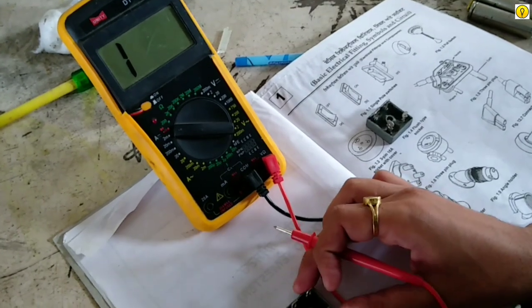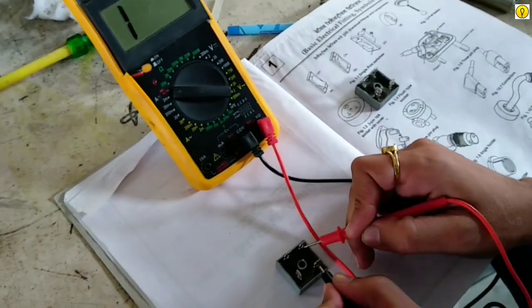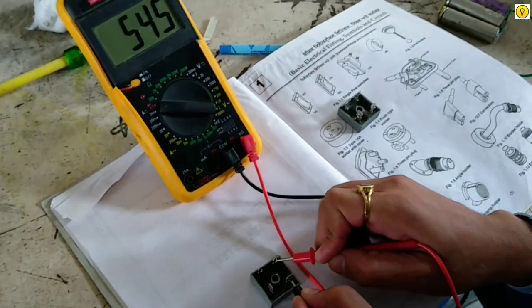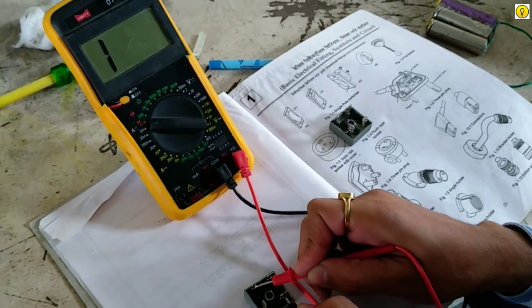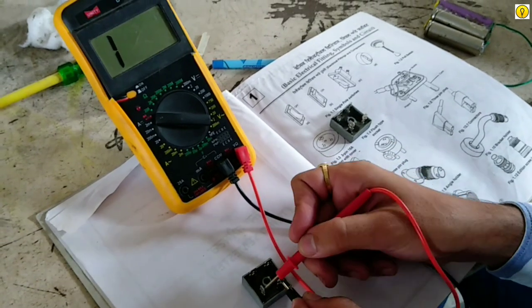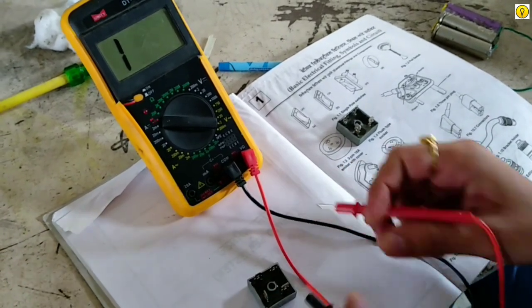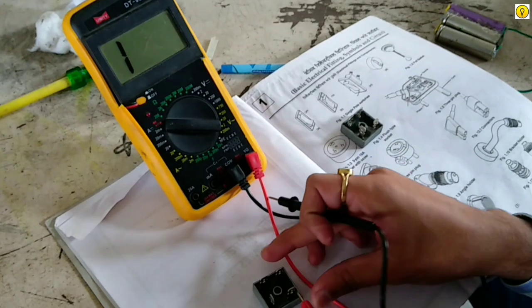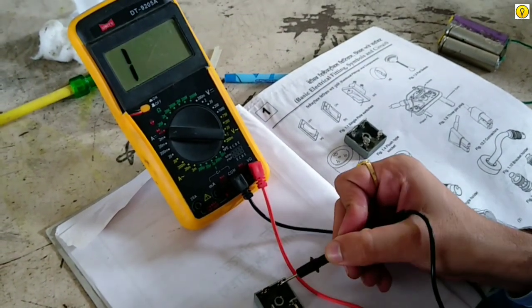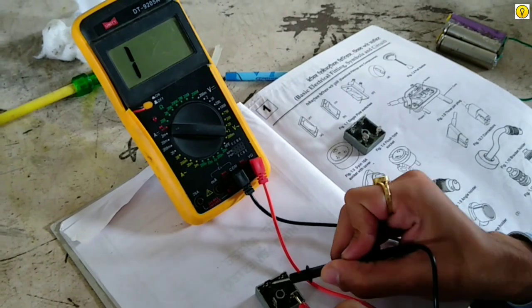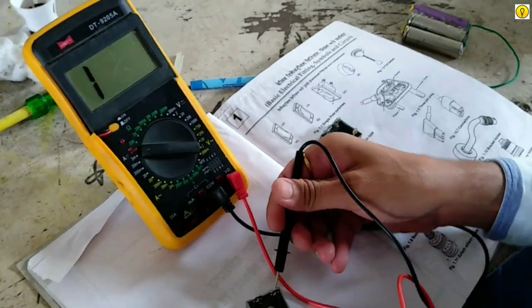So now we are going to check the diode with input supply terminals. So it doesn't show any continuity. So this diode is in working condition. So by using this method we check the diodes or rectifiers easily. Thank you so much, I'll see you next time.